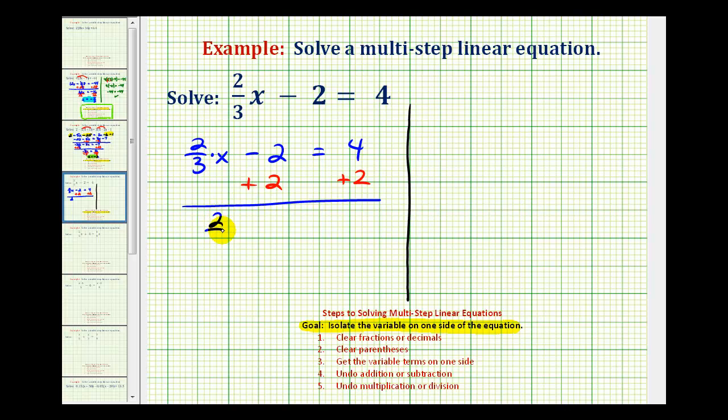So we have two-thirds x minus two plus two that would be zero that's why we did that equals four plus two is equal to six. Now remember our goal is to have x equals some number. Since these are connected by multiplication we might be thinking we should divide by two-thirds. Remember dividing by two-thirds is the same as multiplying by the reciprocal. So instead of dividing by two-thirds we're going to multiply both sides by the reciprocal of three-halves.